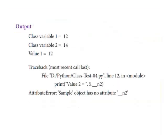The output shows class variable 1 equal to 12 and class variable 2 equal to 14 from the print function inside the class. In the last two print statements, value1 equals 12, but for value2, we get an error message because n2 is private.